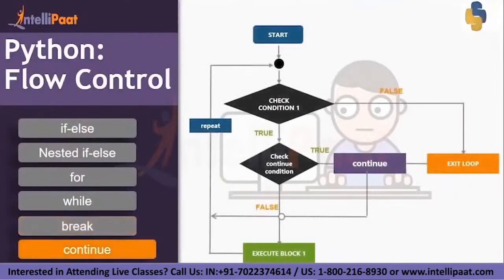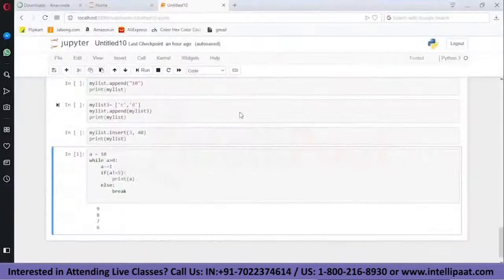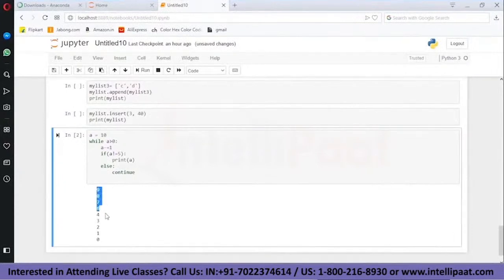Next we have the continue statement. The continue statement won't break the loop — it will just skip the statement in case the condition is true. Let's understand this with the help of a flowchart. Start, check condition one — if true, check the continue condition. If false, execute block and repeat. If the continue condition is true, stop executing that particular block for that iteration and go back to repeat the loop and check the condition again. If we replace the break with continue, you get the output as nine, eight, seven, six, four, three, two, one — but you didn't get five, because it was skipped.